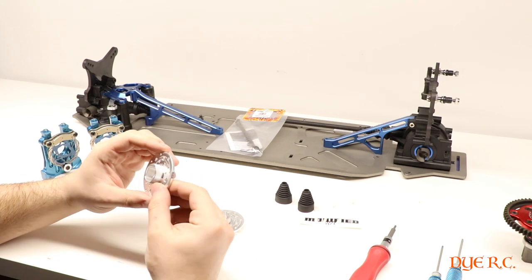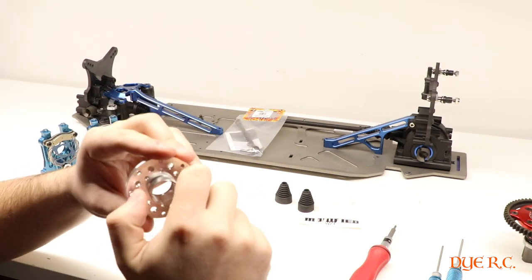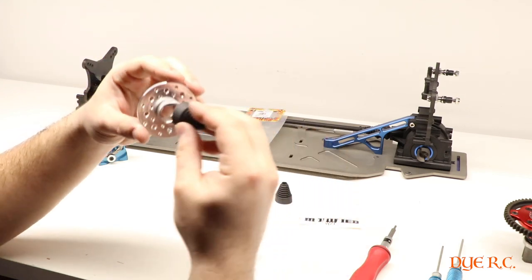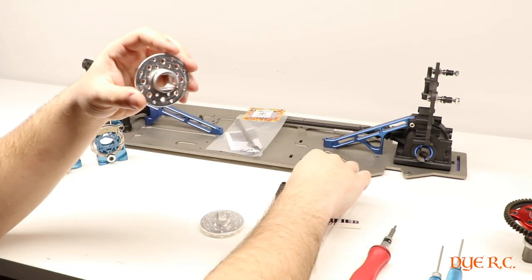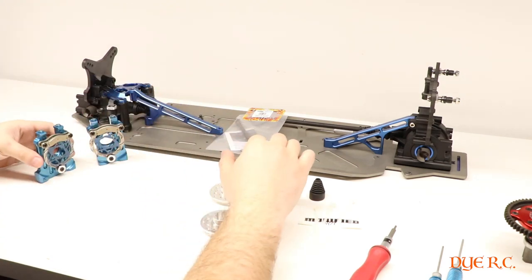Alright, so this is what the disc looks like, and then it has a knurled end for the boot to kind of grip onto. But that's what they look like to get them installed.